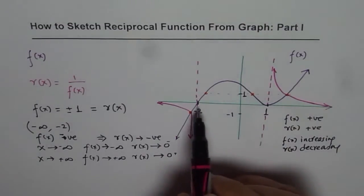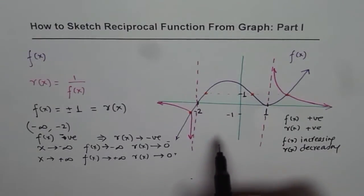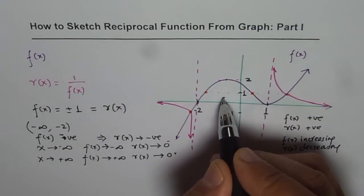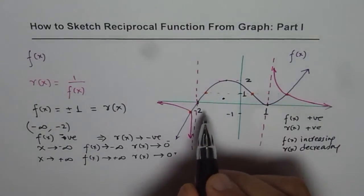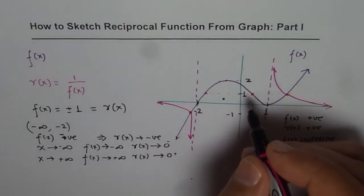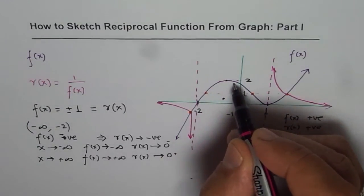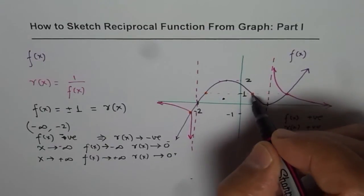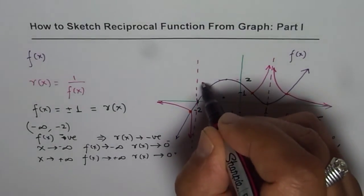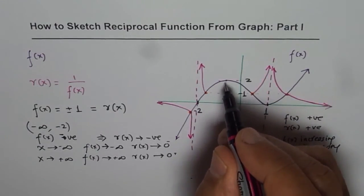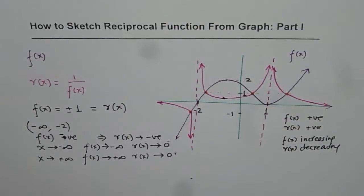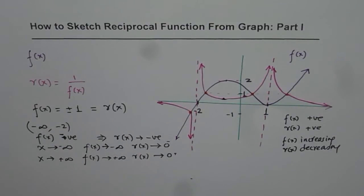Now let's look at the center portion between minus 2 and 1. Somewhere here we have a maximum value — let us say we can read from the graph that this value is 2. The reciprocal of 2 is one-half, so the reciprocal function has a minimum at one-half here. We know the invariant points, and if the function is positive the reciprocal is positive. If the function approaches 0, the reciprocal approaches infinity on both sides. The maximum of the original function becomes the minimum of the reciprocal. We can join these points to complete the graph.